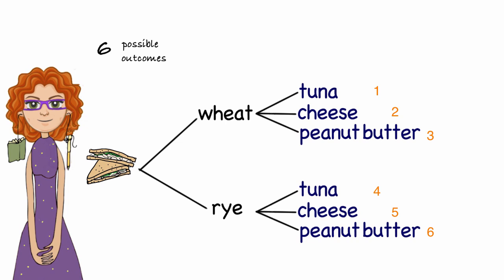I can see there's a relationship between the number of decisions to be made and the possible outcomes. I could have multiplied two times three to find out that I had six possible options. And when I do that...